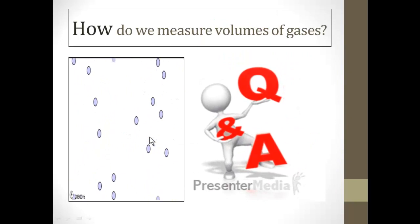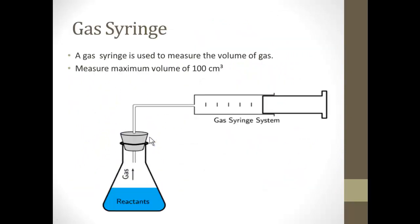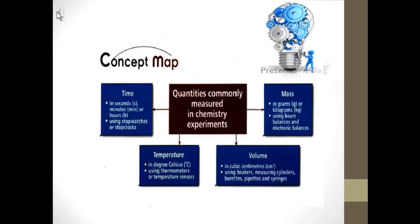Now how do we measure volume of gases? By a gas syringe. A gas syringe is used to measure volume of a gas. It measures maximum volume of 100 centimeter cubed.